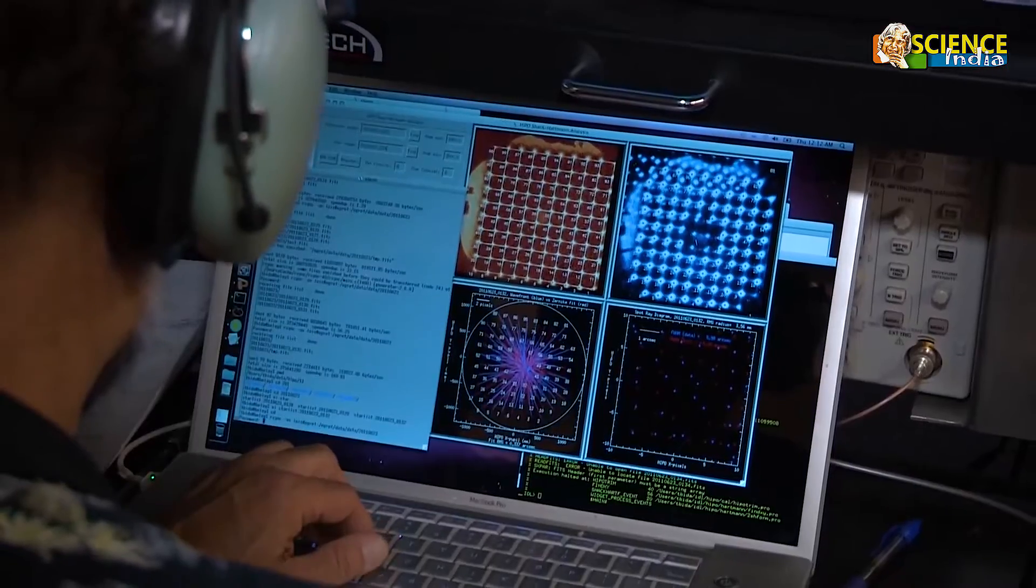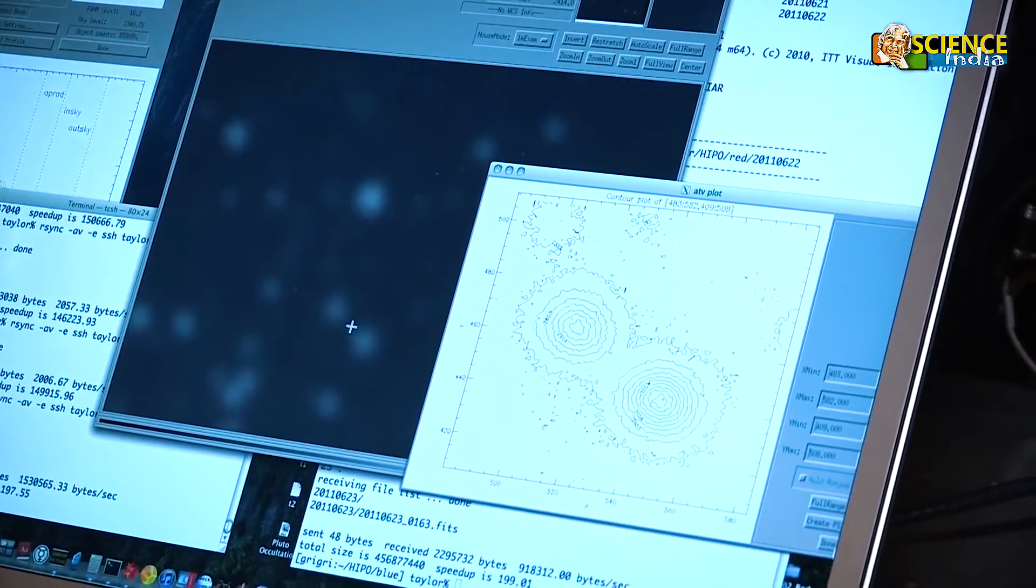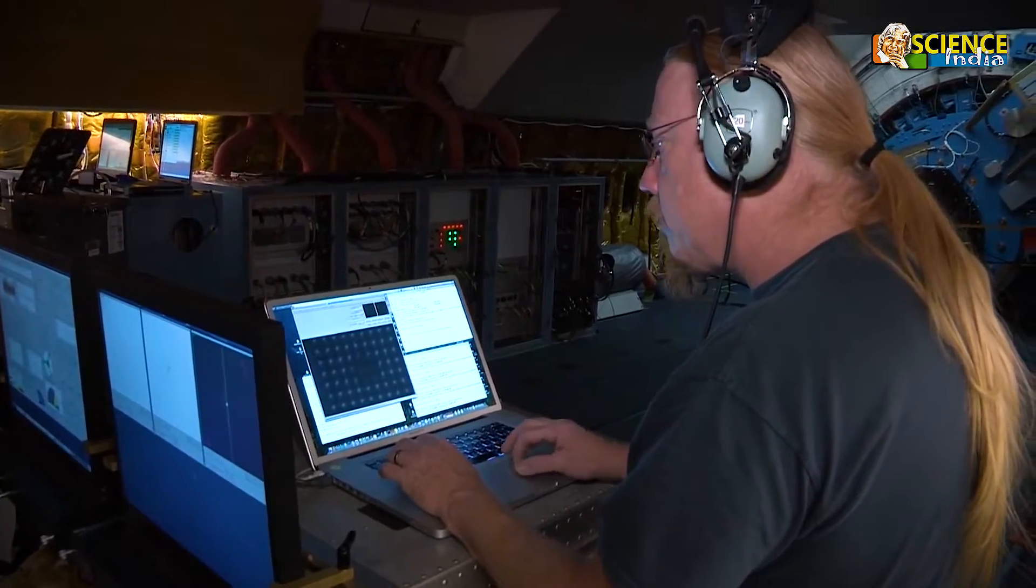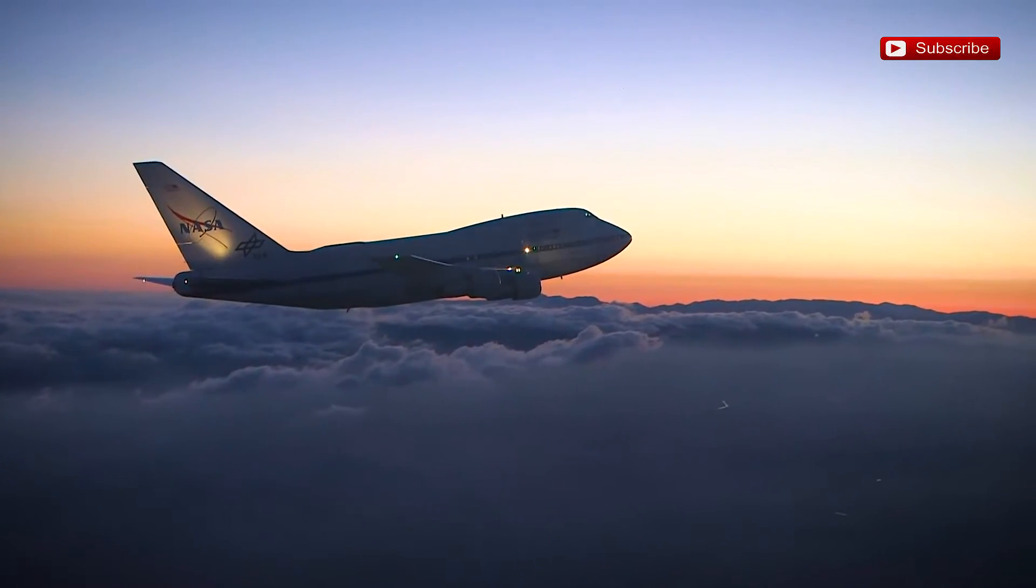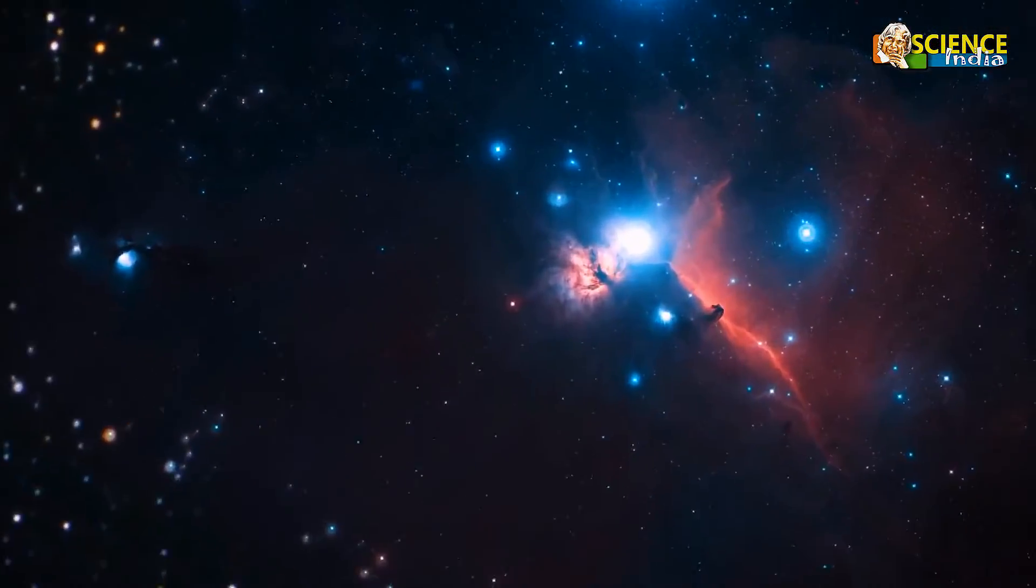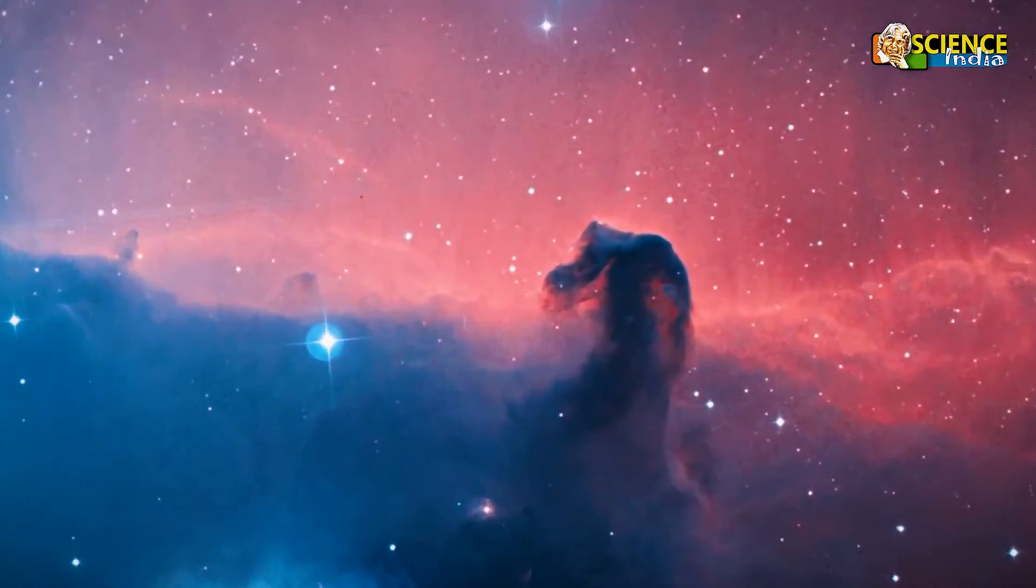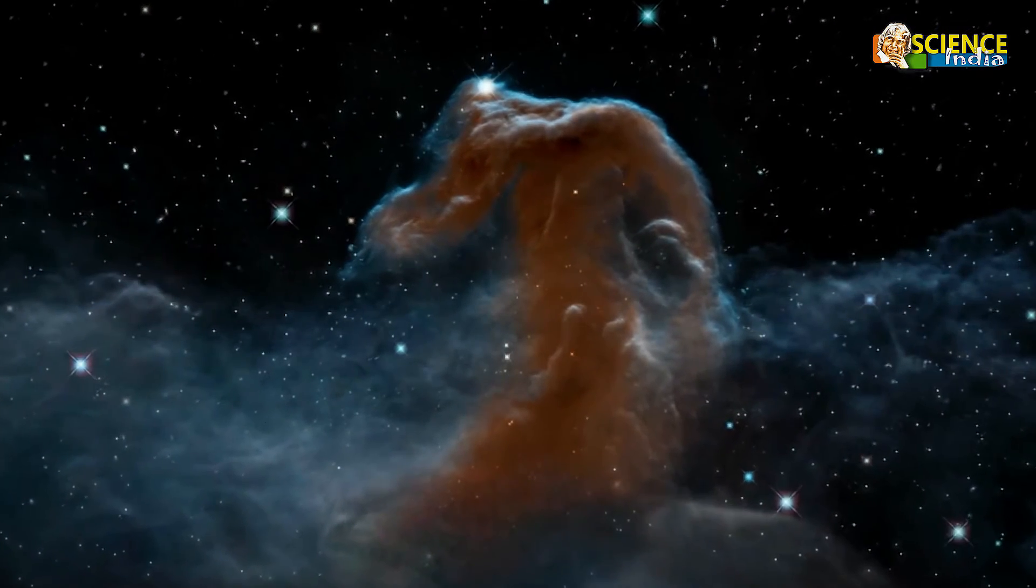Now let's discuss how helium hydride was found in such a vast Brahmand with SOFIA's help. Scientists believed that helium hydride could only be found where stars are born, and this can only happen in some nebula of the Brahmand. A nebula is a cloud of gas that forms from the remains of dead stars.